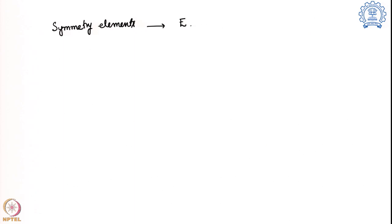Previously we looked into the different symmetry elements that are present and found there are five of them: starting with an identity operator, principal axis of rotation, plane of reflection sigma h, sigma v, and sigma d depending on its relation with the principal axis or Cn. Then we also have improper axis of rotation, and along with that we also have the center of symmetry inversion.